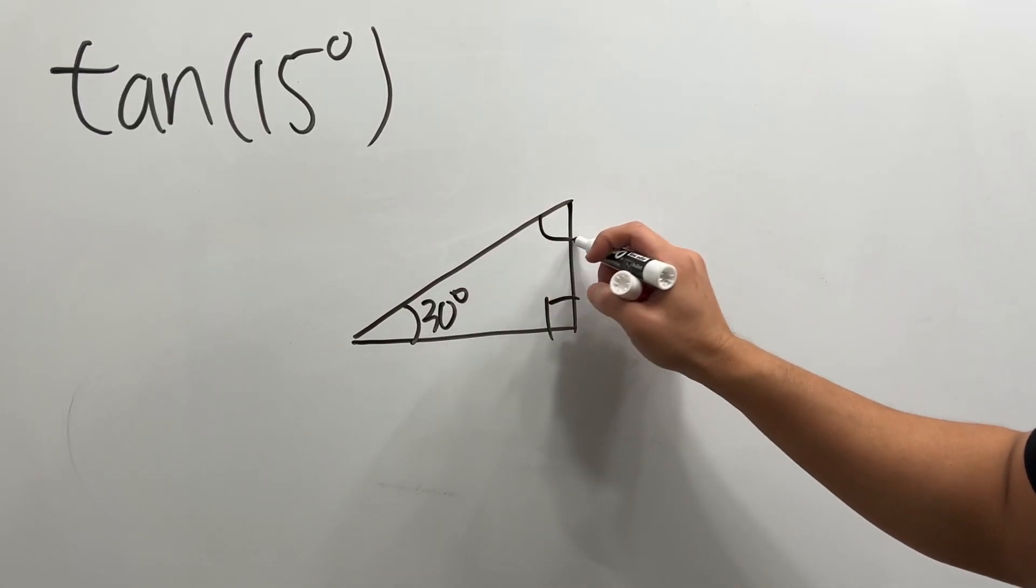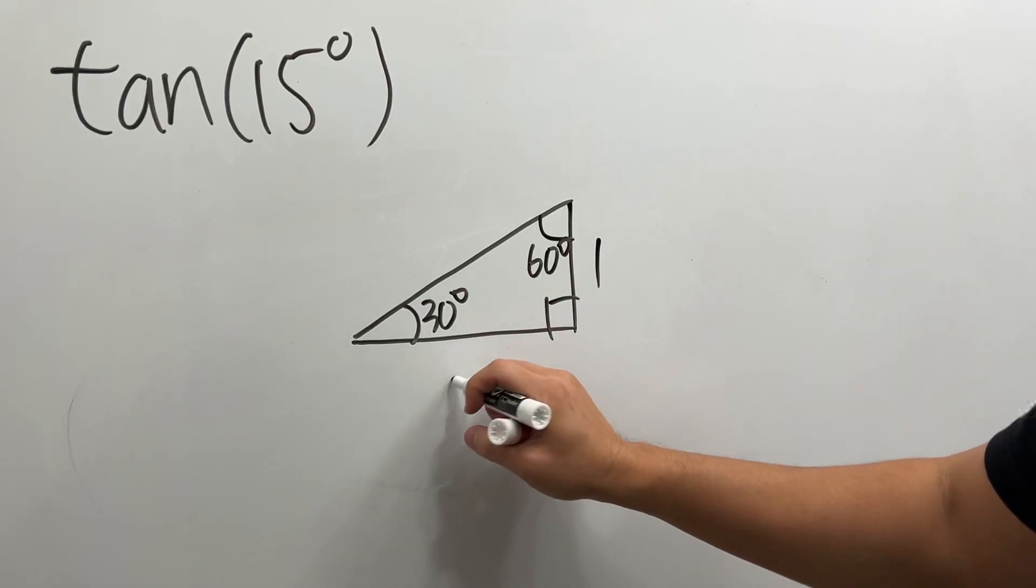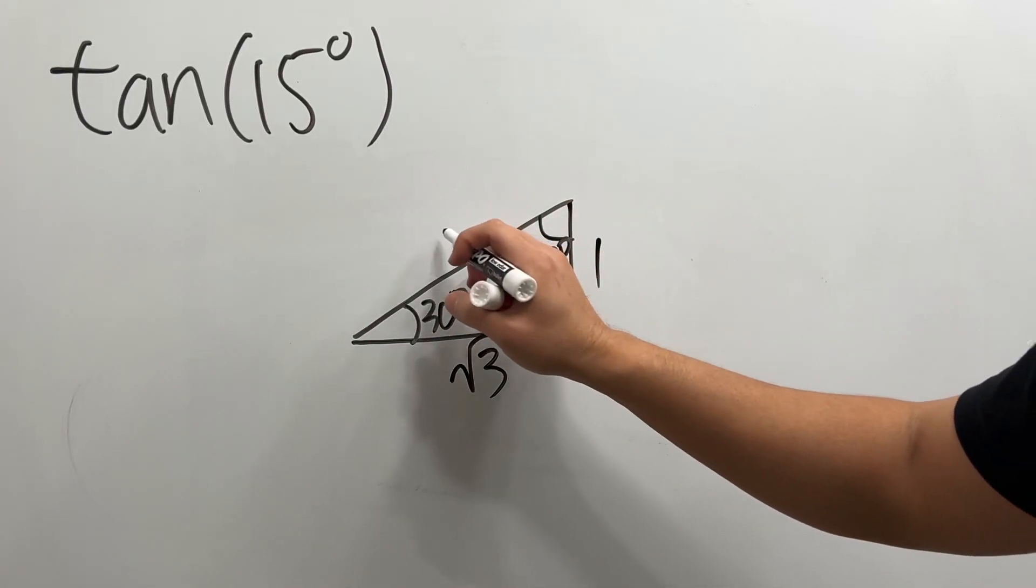And we know the ratio of the sides. Here is 1, here is square root of 3, and this right here is 2.